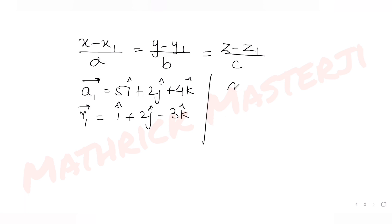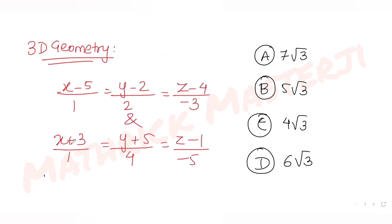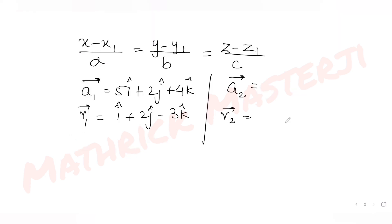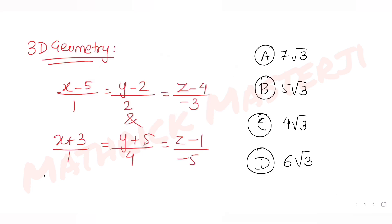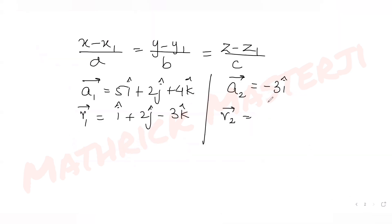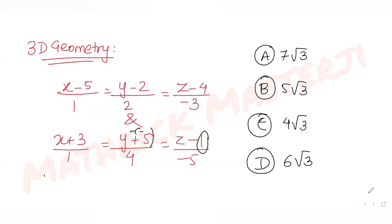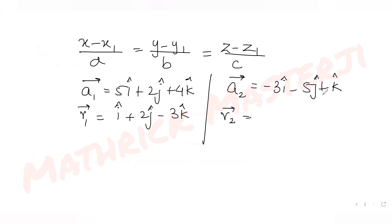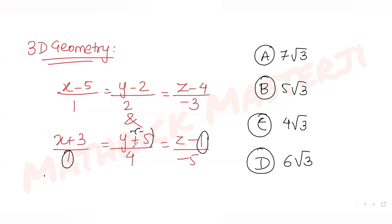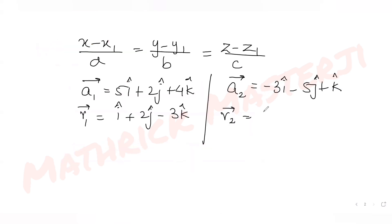For line 2, vector a2: since the equation has x + 3, that's x − (−3), so x₁ = −3, giving −3i. Similarly, y + 5 = y − (−5), giving −5j. And z − 1 gives +k. So a2 = −3i − 5j + k. Direction vector r2, from the denominators, is i + 4j − 5k. Wait, it should be i + 4j − k.